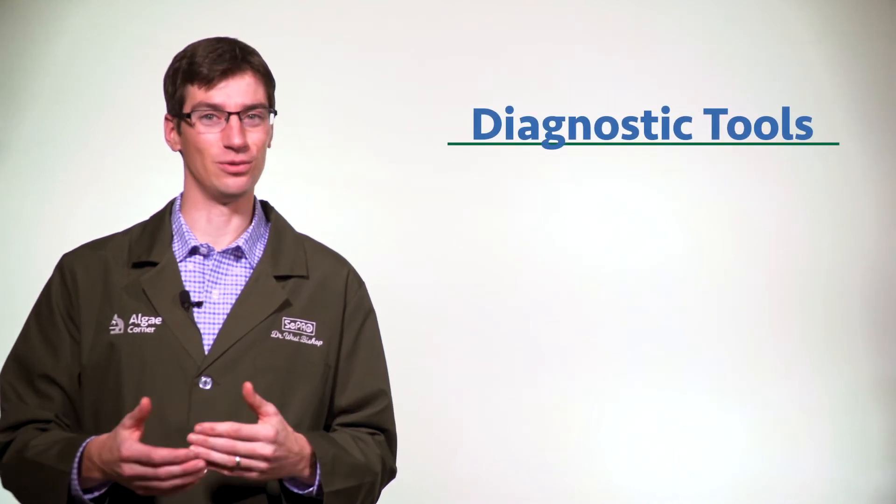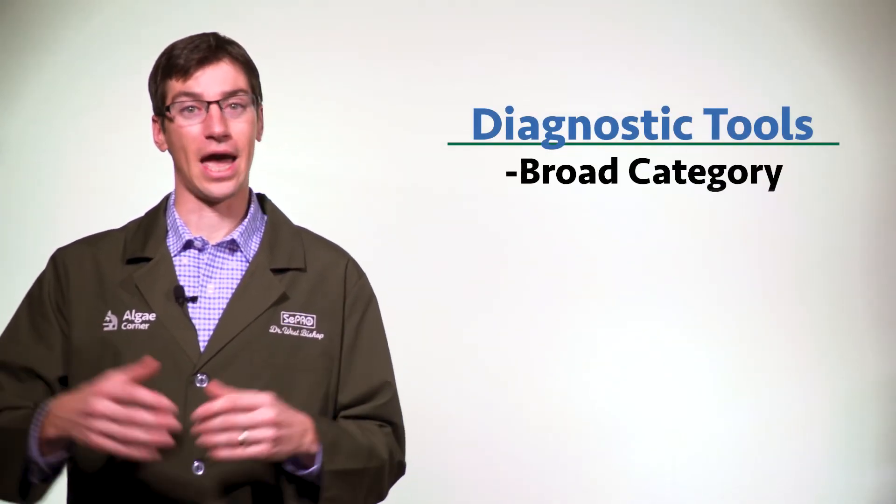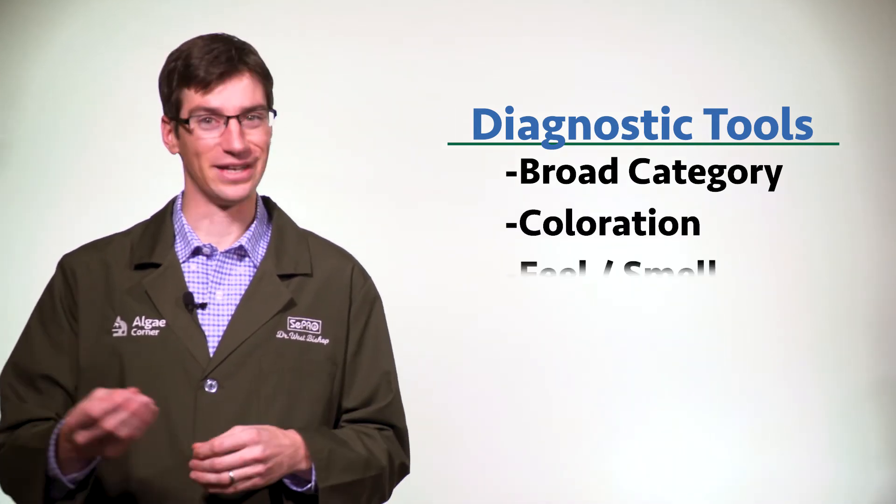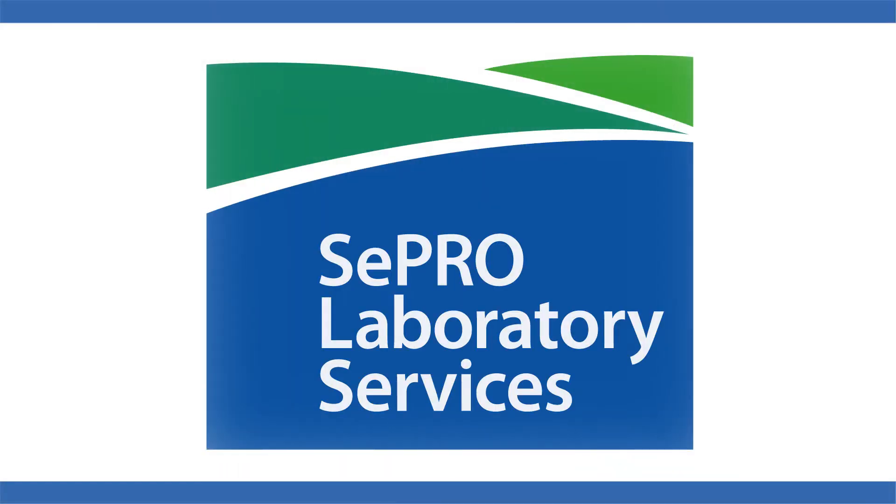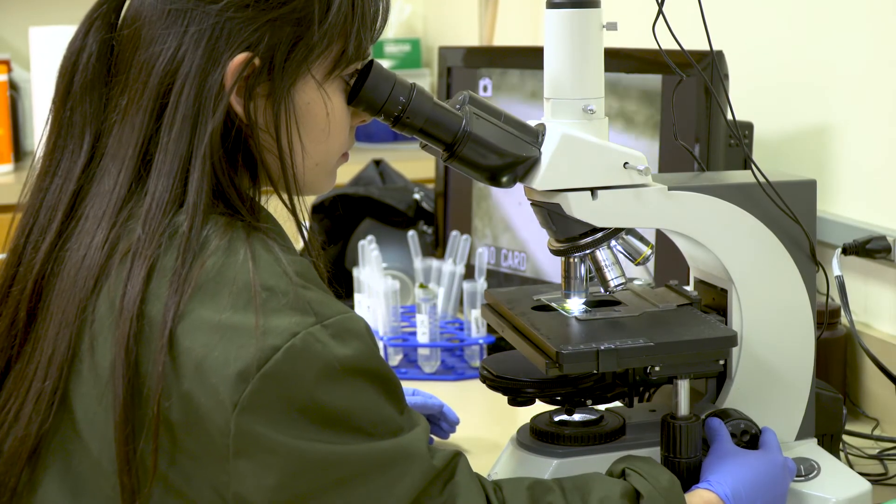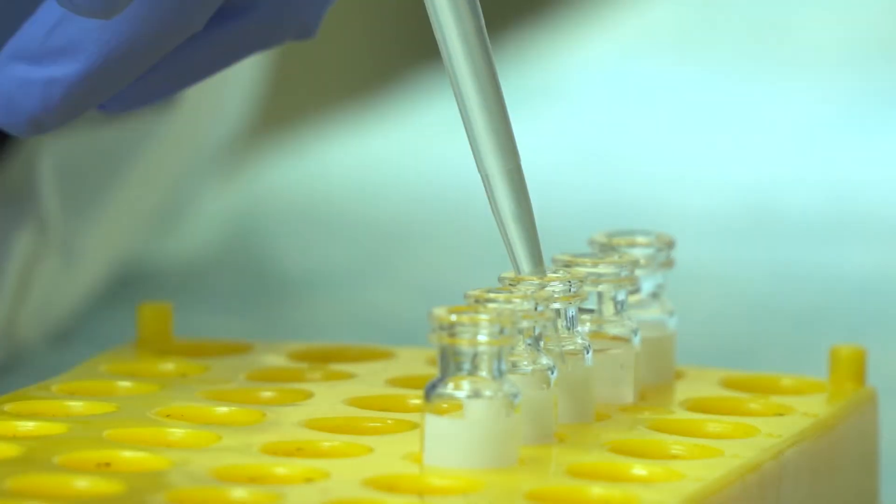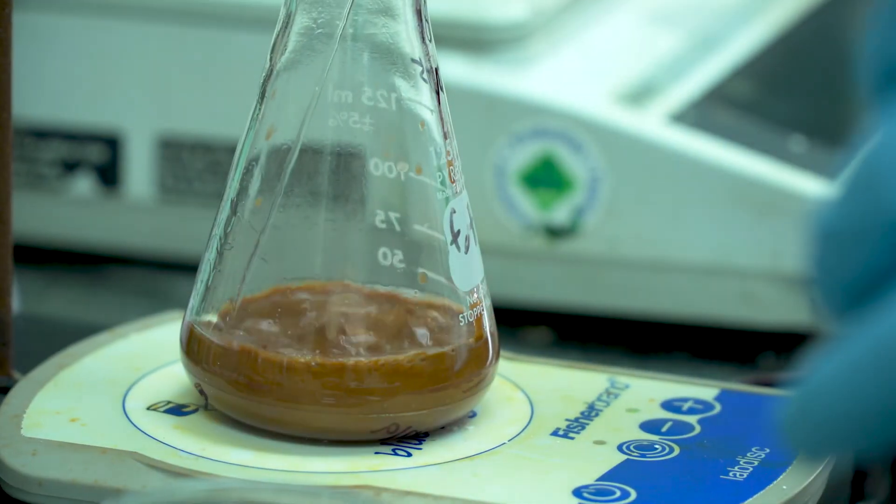There are some diagnostic clues that we covered, such as what they look like, what the broad category is, their coloration, and what they feel and smell like that can help you narrow it down. But if you need more help, if you want to send in a sample, SePRO offers an algae identification kit. You can send in a sample, we'll look at it under the microscope, and give you back a nice report telling you what types you have and whether or not they're a problem.